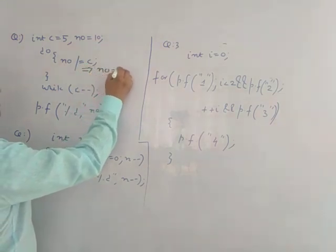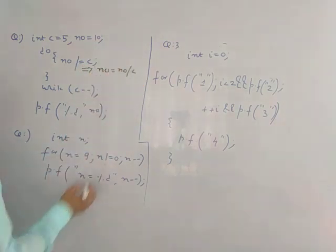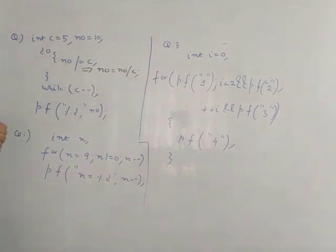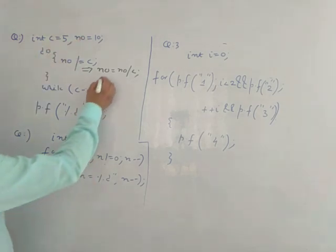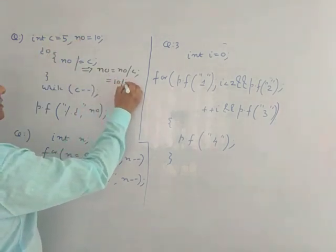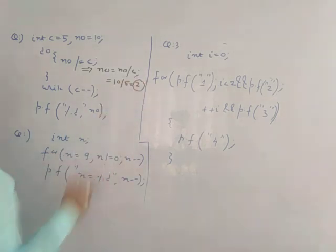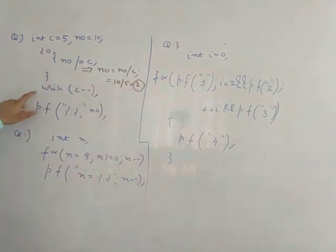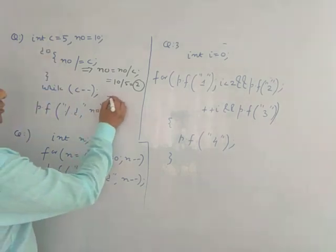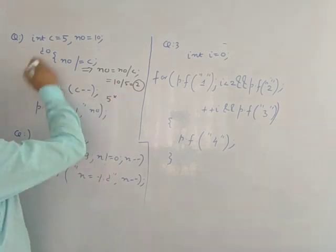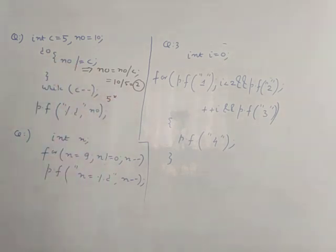num /= c means num is equal to num divided by c. So c is 5 and num is 10, so this is 10 divided by 5 which is 2. So the value of num is 2. Now while c--, the value of c is right now 5. I am putting a star because when it comes back, c becomes 4.